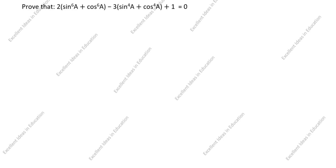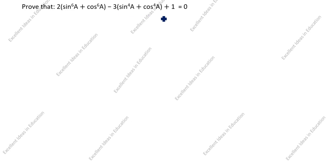Hi students, welcome to my channel Excellent Ideas in Education. Today we are going to solve this trigonometry problem. This is a board exam problem. Prove that 2(sin⁶a + cos⁶a) − 3(sin⁴a + cos⁴a) + 1 is equal to 0.